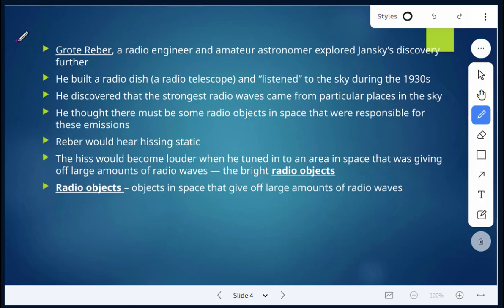And so he discovered that the strongest radio waves came from particular places in the sky. He thought that there must be some sort of radio objects in space that were responsible for those emissions. He would also hear hissing static. That hiss would become louder when he turned into an area in space that was giving off large amounts of radio waves, and those are called the bright radio objects. These are objects in space that give off large amounts of radio waves.